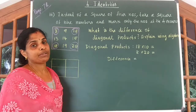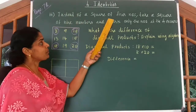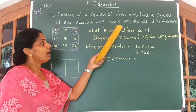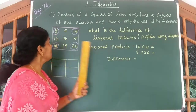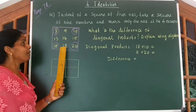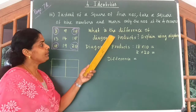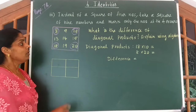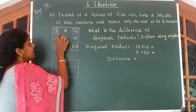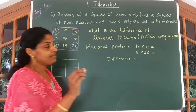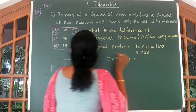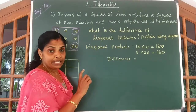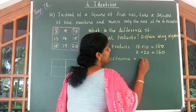Third part of the same question: instead of a square of 4 numbers, take a square of 9 numbers and mark only the numbers at the 4 corners. First question: what is the difference of diagonal products? Explain using algebra. So I have marked the corner numbers. 18 into 10 gives you 180. 8 into 20 gives you 160. The difference between these two numbers is 20.